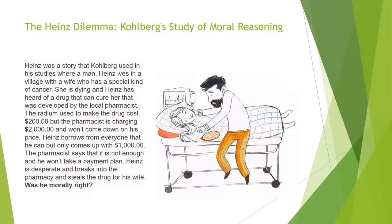An example that he would use is the Heinz Dilemma. Heinz was a story that Kohlberg used in his studies where a man, Heinz, lives in a village with a wife who has a special kind of cancer. She is dying and Heinz has heard of a drug that can cure her, developed by the local pharmacist. The radium used to make the drug cost $200, but the pharmacist is charging $2,000 and won't come down on his price. Heinz borrows from everyone that he can but only comes up with $1,000. The pharmacist says it's not enough and won't take a payment plan. Heinz is desperate and breaks into the pharmacy and steals the drug for his wife. Was he morally right?